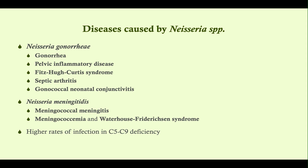Neisseria gonorrhea causes many venereal diseases — gonorrhea is the most common, which can lead to pelvic inflammatory disease and Fitz-Hugh-Curtis syndrome. Gonorrhea can also cause septic arthritis if Neisseria gets into the bloodstream and seeds the joints, and gonococcal neonatal conjunctivitis from neonatal exposure in the vaginal tract, resulting in suppurative conjunctivitis. Neisseria meningitidis causes meningococcal meningitis — very problematic among younger people living in close quarters — as well as meningococcemia leading to sepsis.